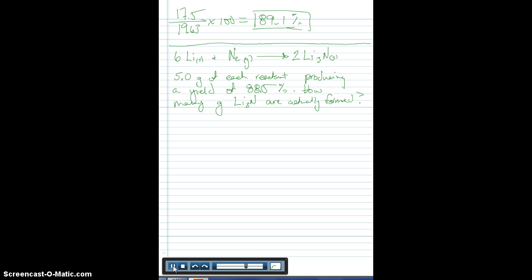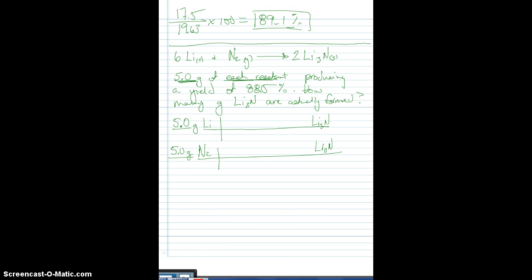Okay. So now, because we have 5 grams of each reactant here reacting, we need to do a limiting reagent type problem to determine our theoretical yield because I'm not sure if they're equal. So let's go ahead and do that real quickly. So 5 grams of lithium to start with, and we're going to go to lithium nitride, and then we'll do 5 grams of our other reactant, which is nitrogen, and we're going to go to lithium nitride as well.